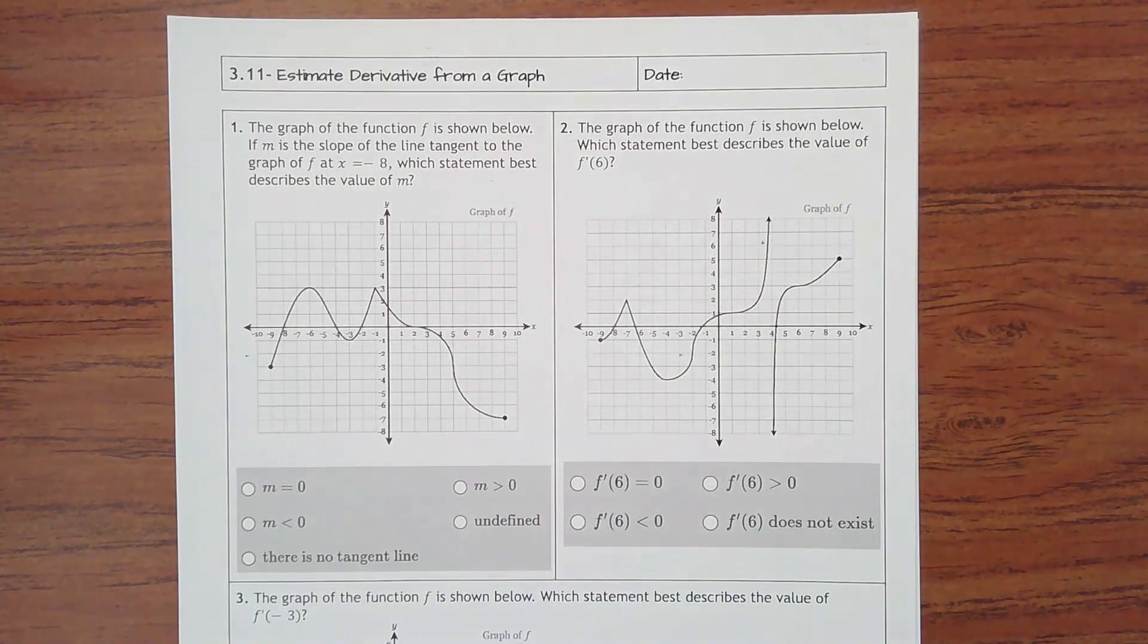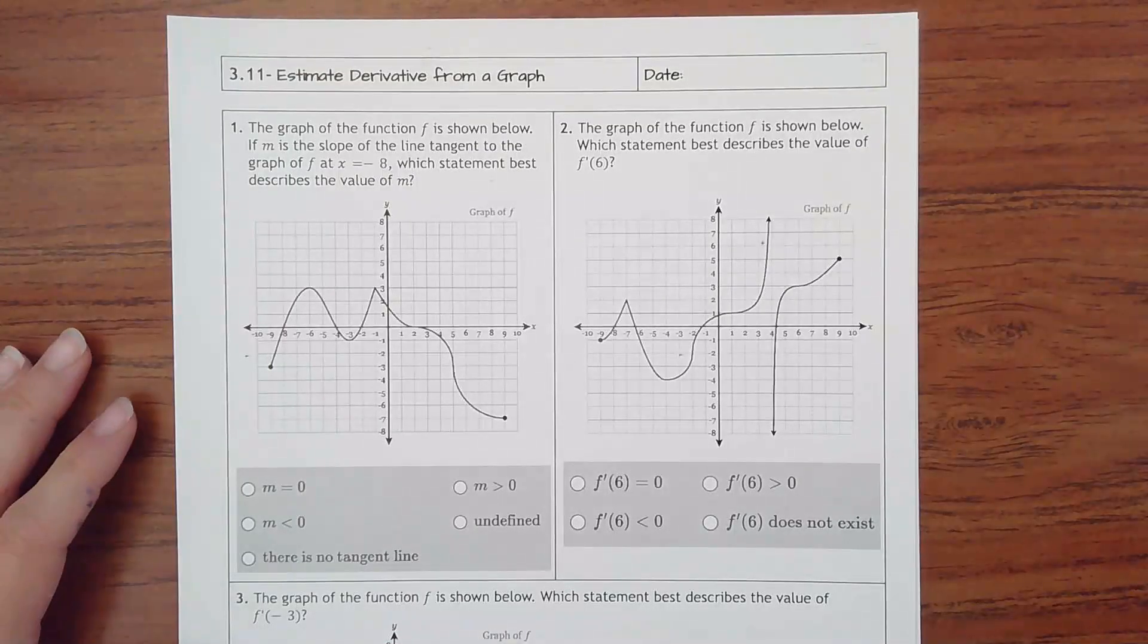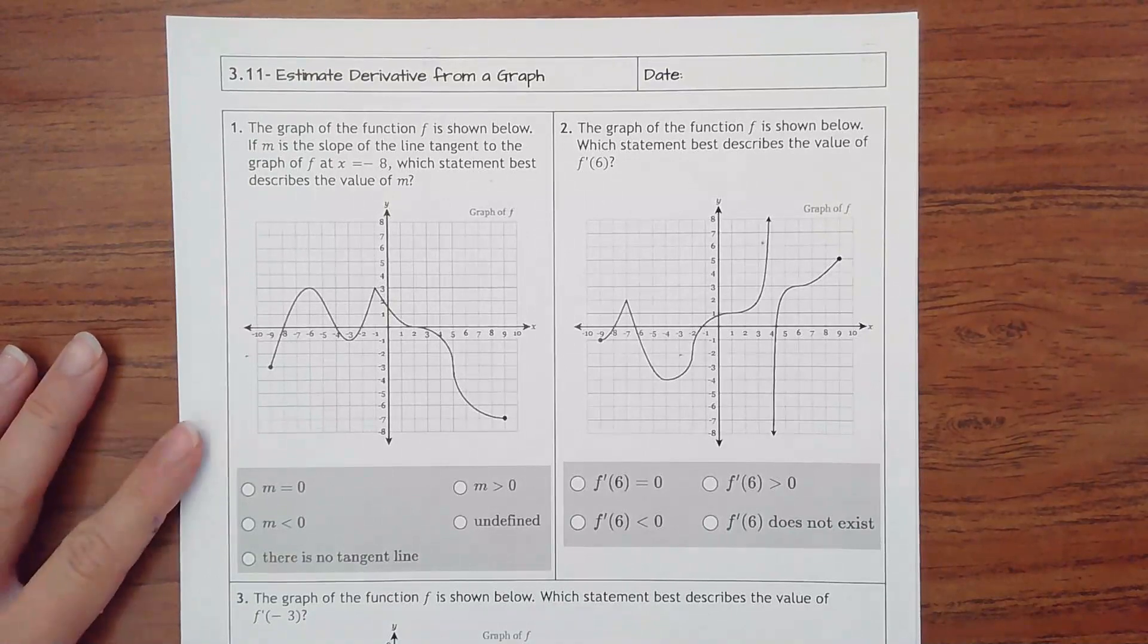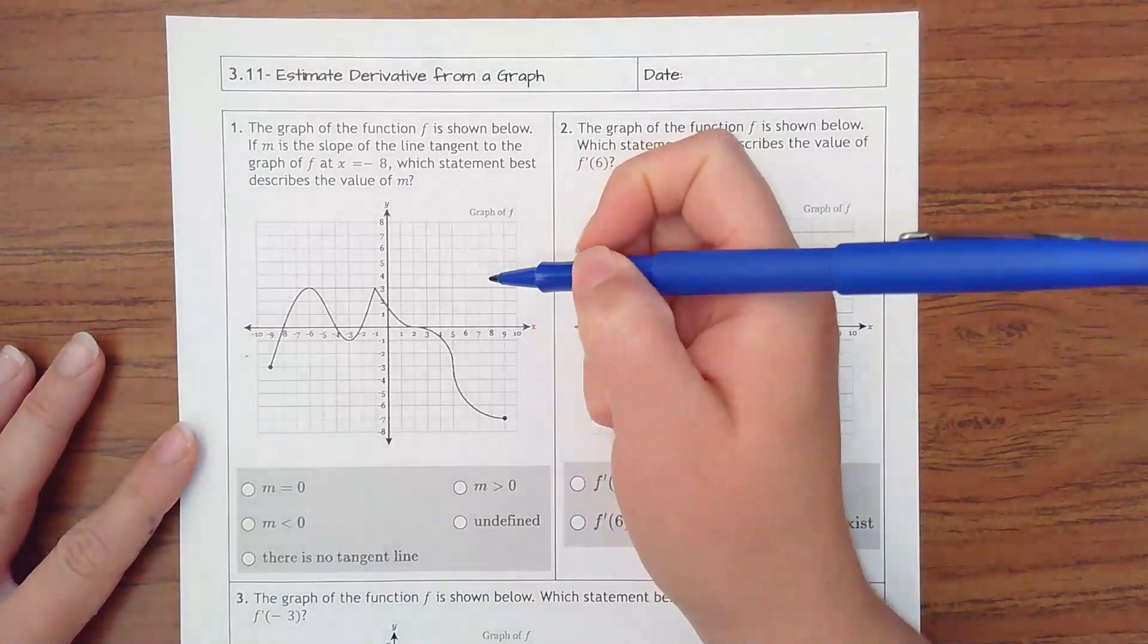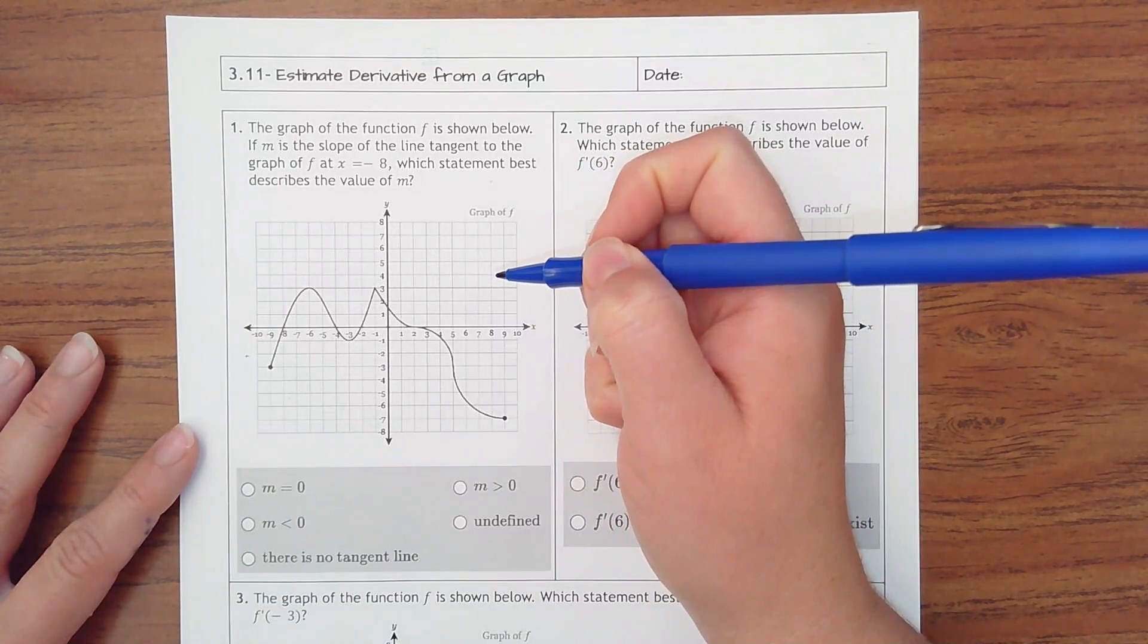3.11 is estimating a derivative from a graph. Number 1 says the graph of the function f is shown below. If m is the slope of the line tangent to the graph of f at x equals negative 8, which statement best describes the value of m?